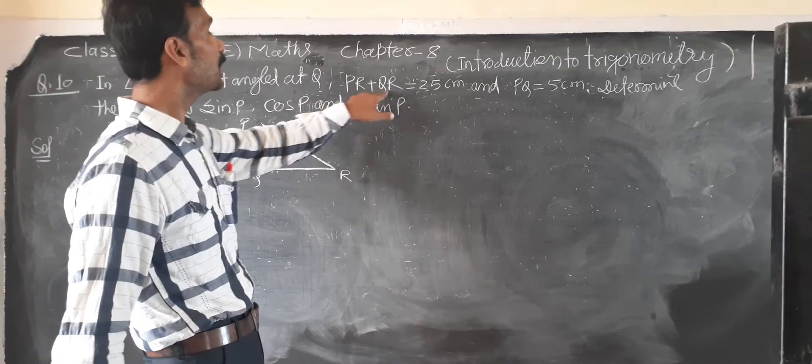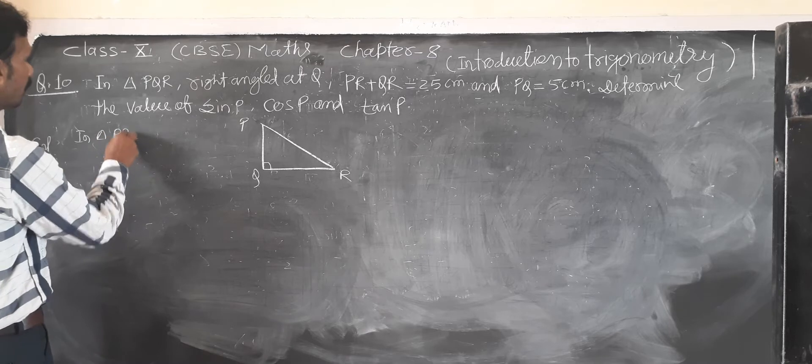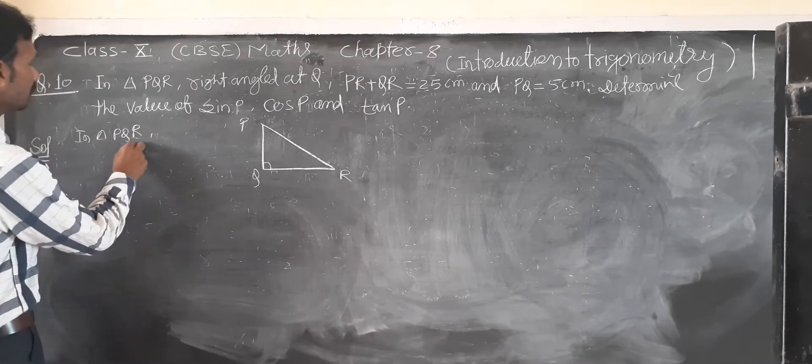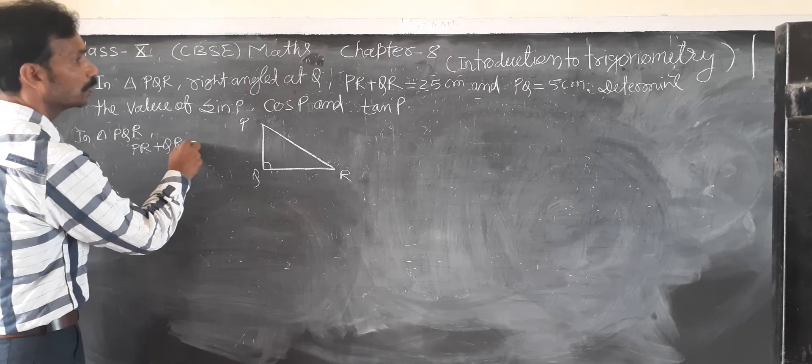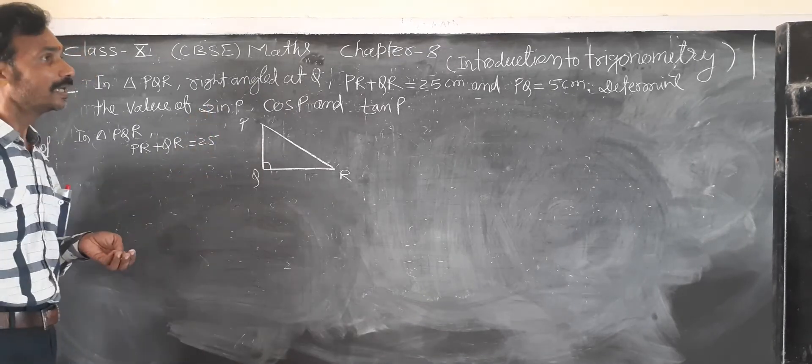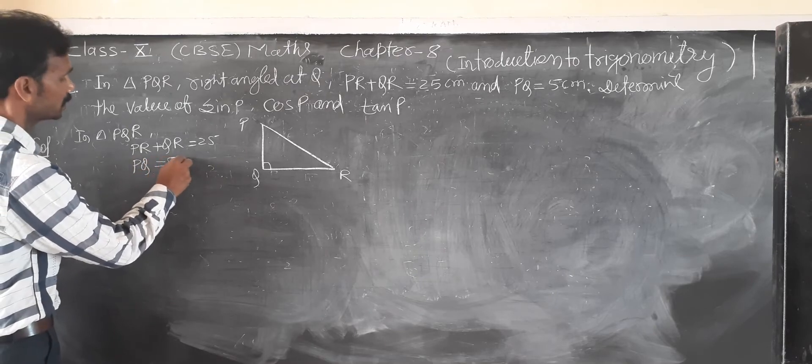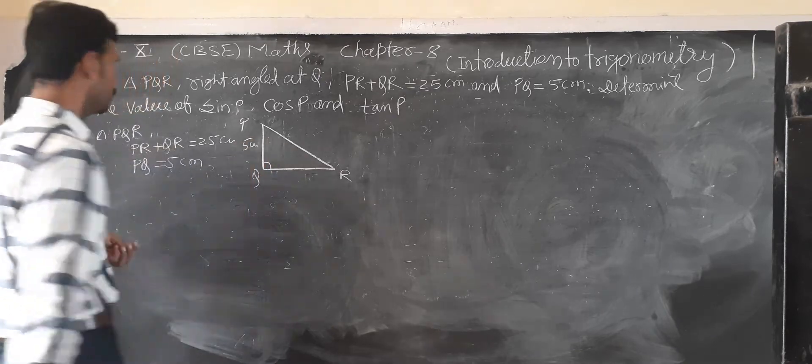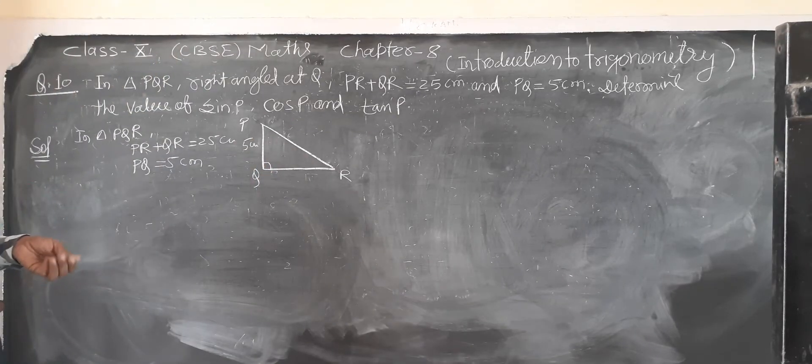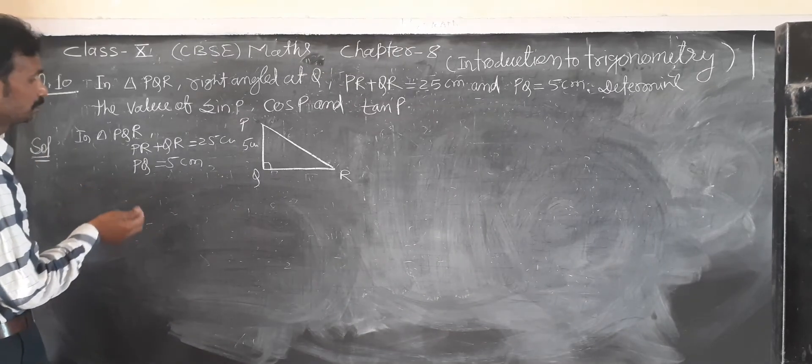So PR plus QR. The question given: In triangle PQR, PR plus QR equal to 25, and PQ equal to 5 cm. PQ, so this is 5 cm, and PR plus QR, this is 25 cm.